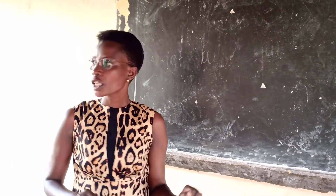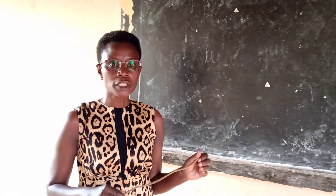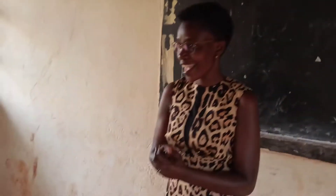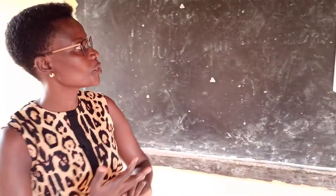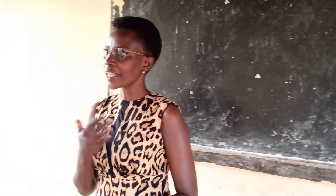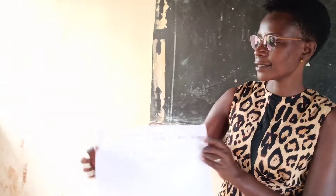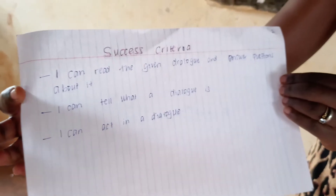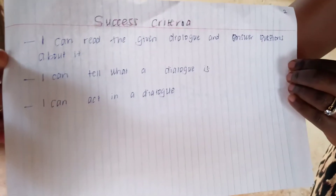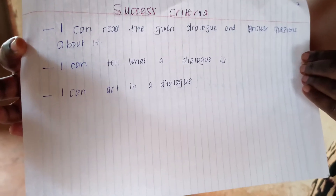We are still looking at local materials in our environment, but today we shall use them in the form of a dialogue. And you know what a dialogue is? A dialogue is a conversation between two or more people. This dialogue is going to be run by Melina and Patience. Before we begin, here is the success criteria: I can read the given dialogue and answer questions about it. I can tell what a dialogue is. I can act in a dialogue.